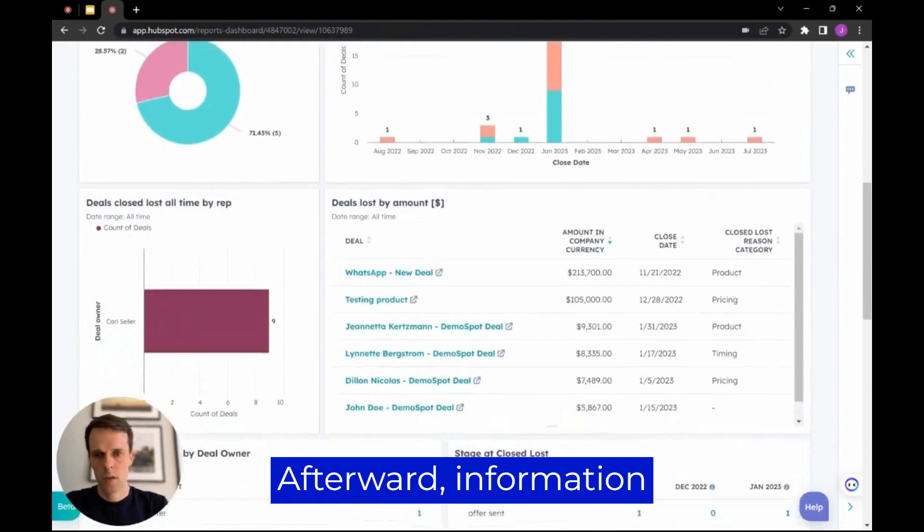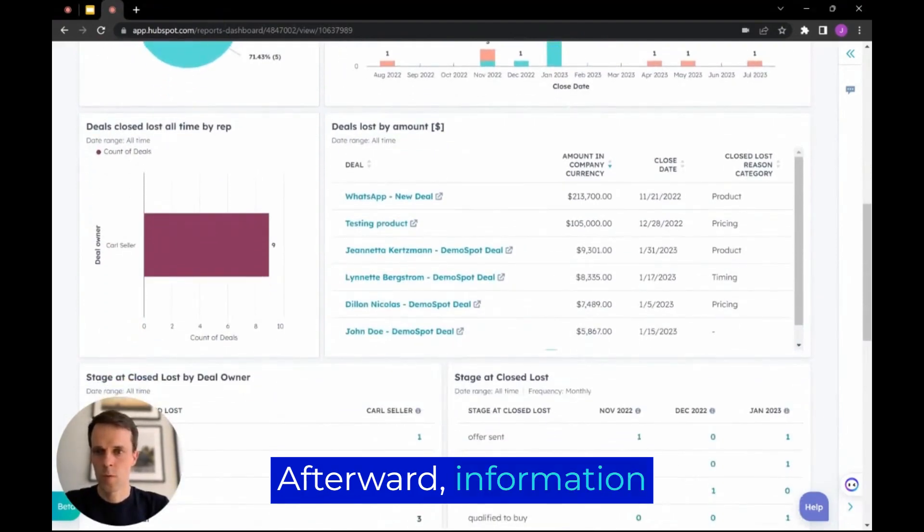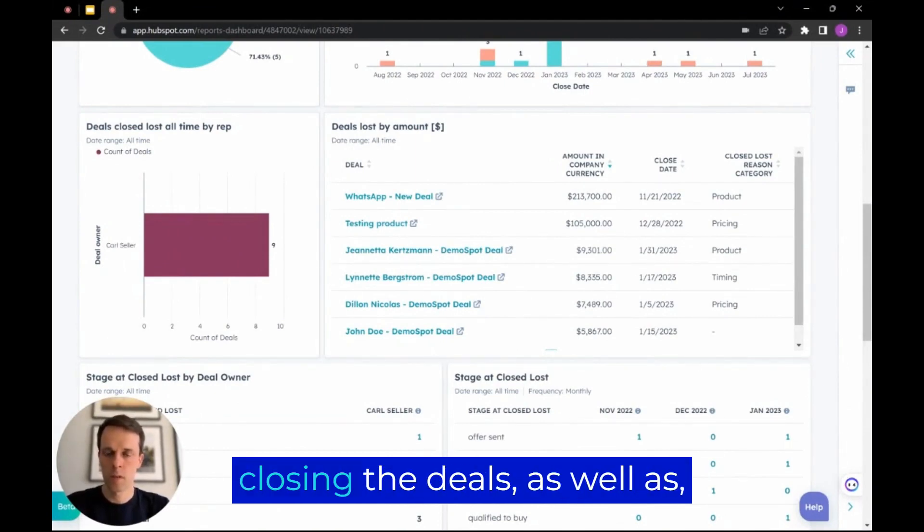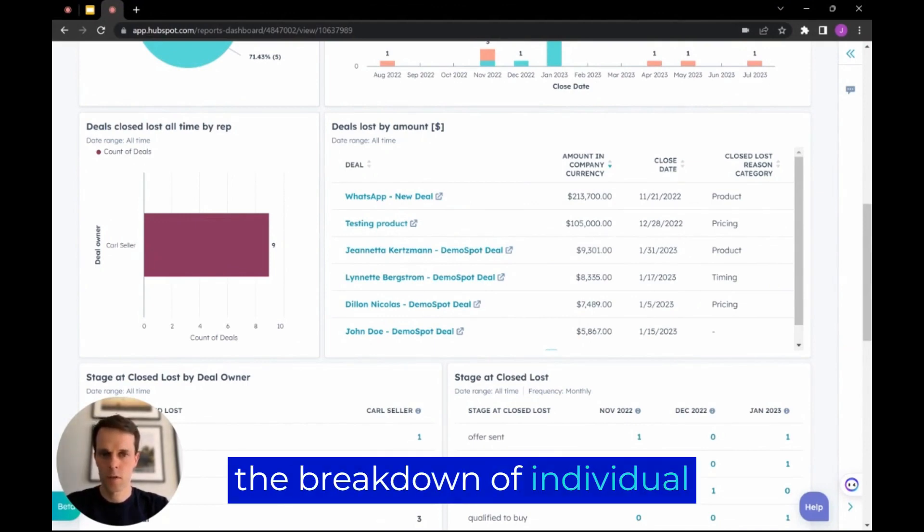Afterwards, information about deals lost by rep. So you can see who is having the most difficulties with closing the deals, as well as the breakdown of individual deals sorted by the amount.